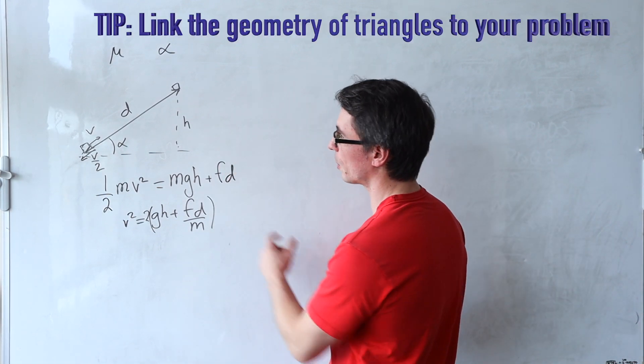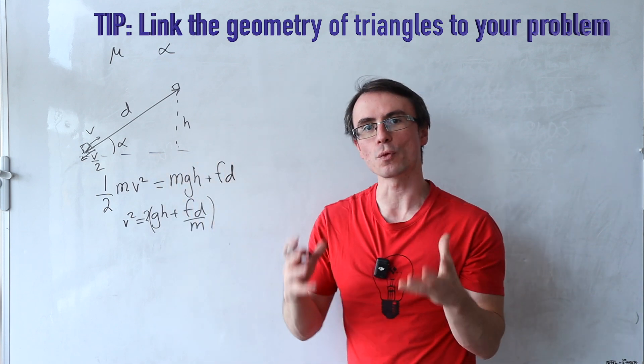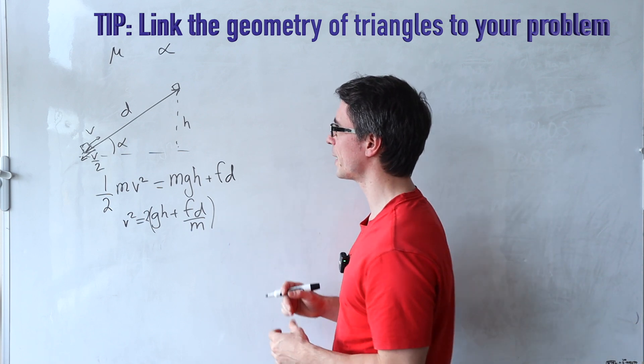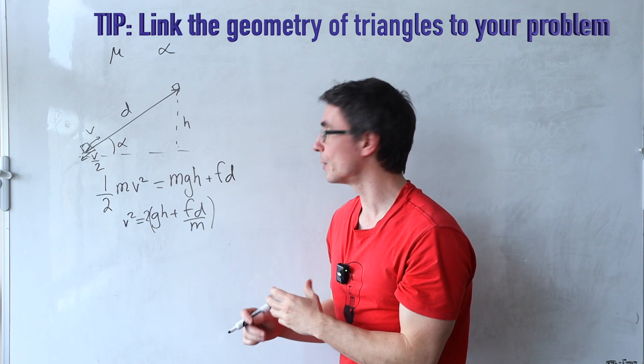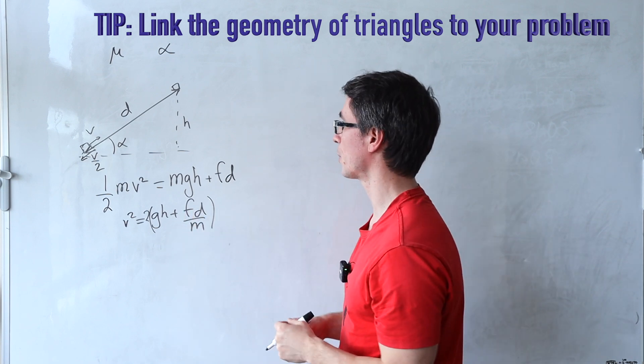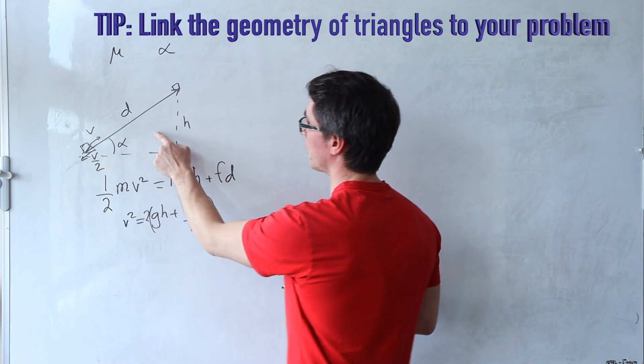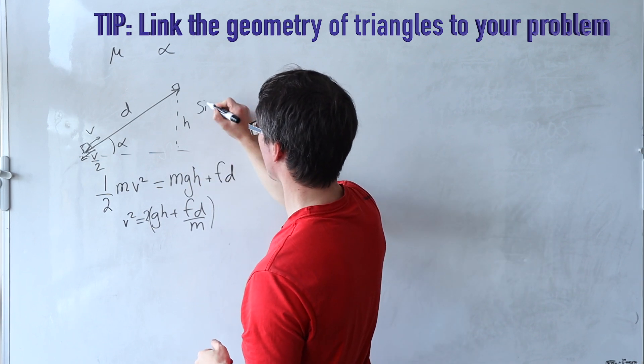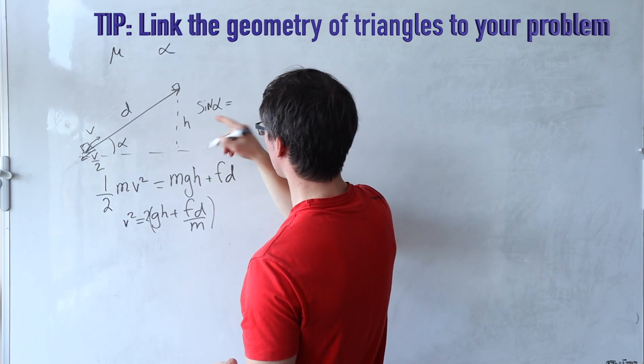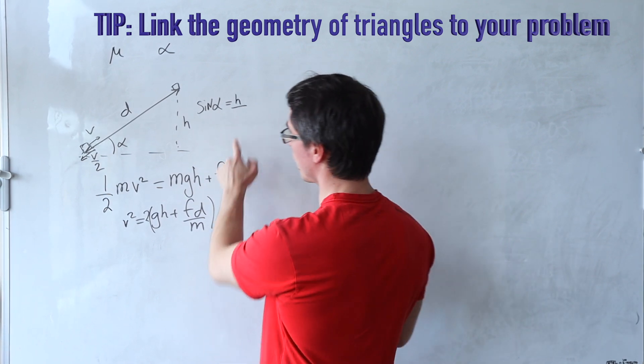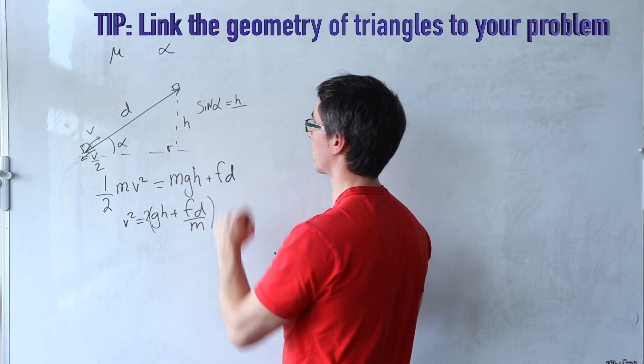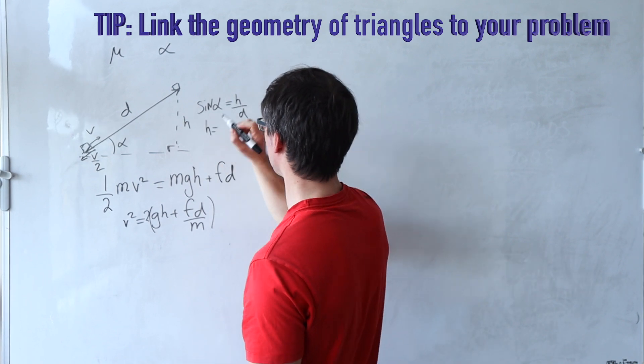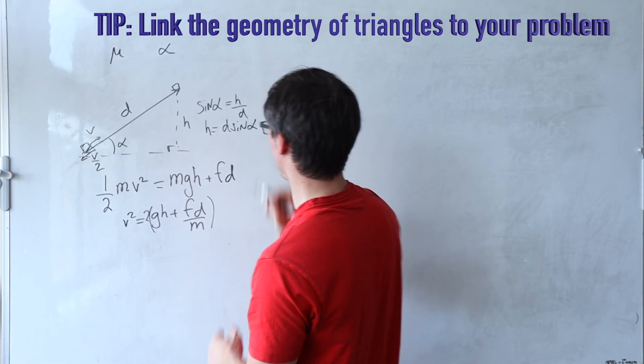Now one thing that I can immediately spot is that this over here is a right hand triangle. So very often in physics olympiads I've noticed that there is a direct link between the geometry of right hand triangles and some of the variables that we use in the equations. So even if we just focus on this triangle, now the height is the opposite. So we can say just as an aside that sine of alpha is opposite which is just h divided by the hypotenuse, because this angle here is a right angle, divided by d. So this means that h in terms of the distance traveled will be equal to d sine of alpha.